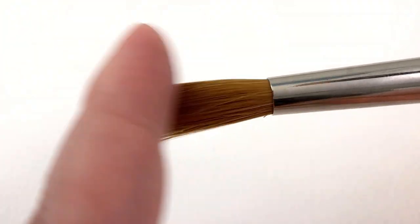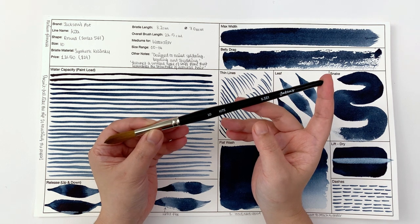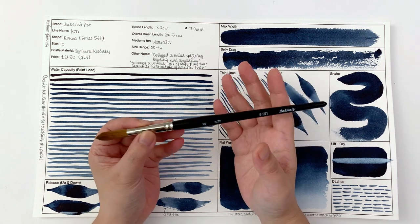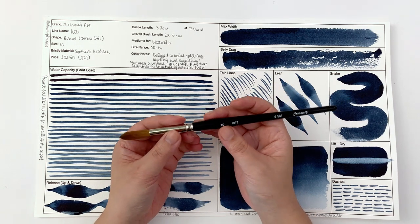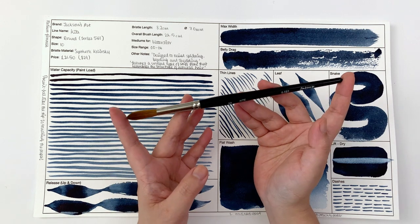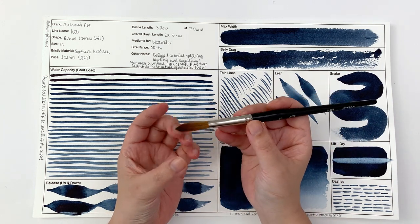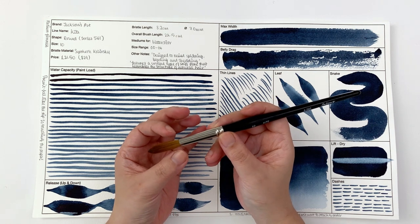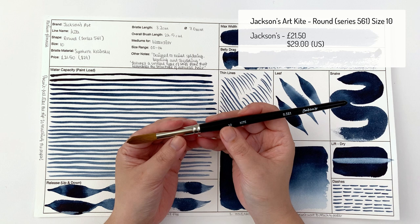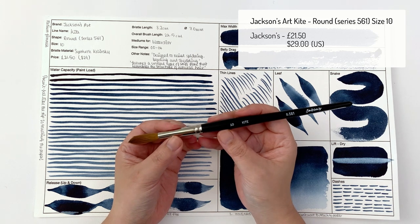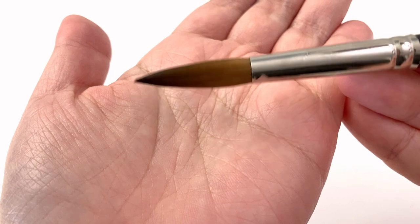It is suitable for watercolor and comes in sizes from double zero to 14, so quite a narrow range but the most useful and commonly used sizes. The overall brush size is 22.5 centimeters, the bristle length is 3.2 centimeters, and the width is 7 millimeters, which is about 0.2 millimeter wider than your average size 10. It is priced at £21.50 over on Jackson's, which is $29, so it's a little bit pricier than some of the brushes we've seen in this series.